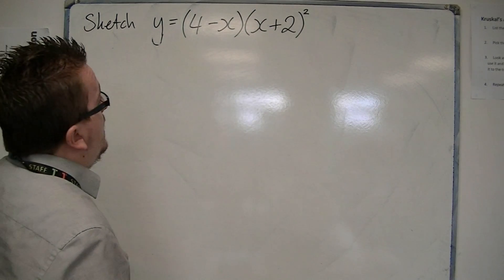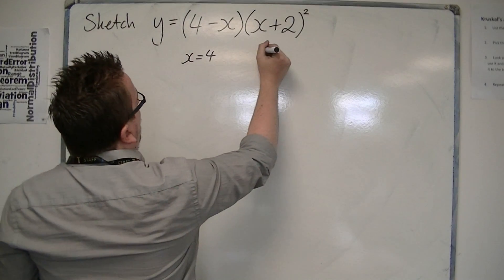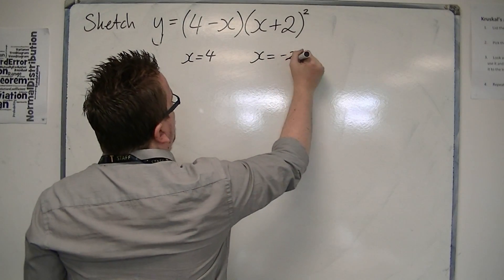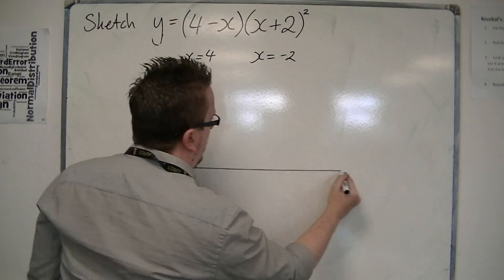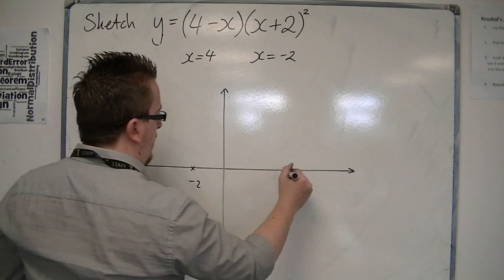We know that this cubic must cross the x-axis at 4 or at minus 2. So it's only got two points where it crosses the x-axis: minus 2 and 4.